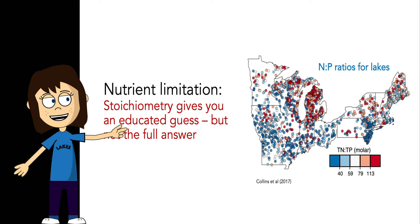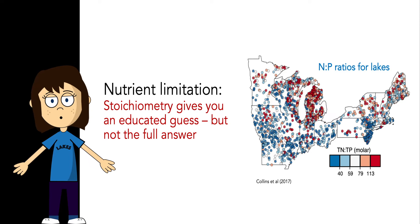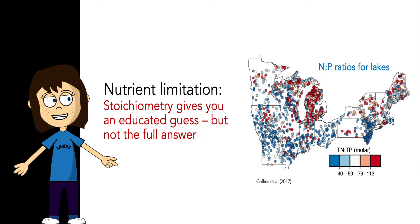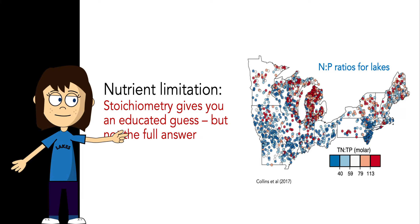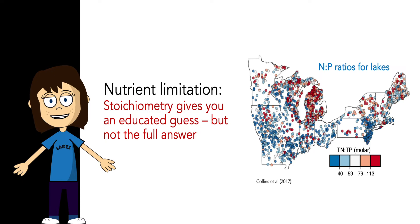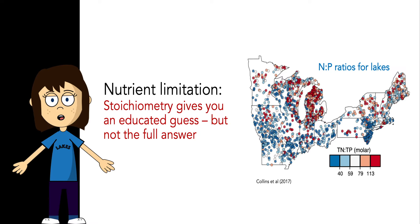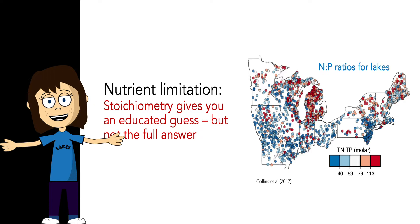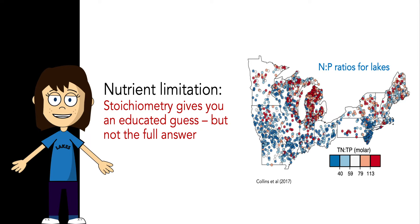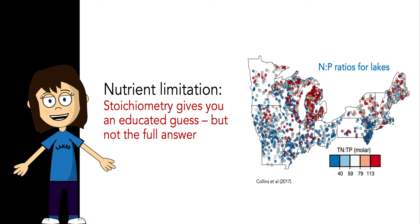Here's a map of nutrient stoichiometry across the midwest and northeast United States, showing the nitrogen to phosphorus ratio in 2,700 lakes. Lakes in the north, such as in Michigan, tend to have a really high nitrogen to phosphorus ratio, likely meaning phosphorus is the limiting nutrient. As you go south into the midwest agricultural belt, that ratio decreases, but it's still much higher than the Redfield ratio of 16 to 1, so phosphorus may still be limiting. Stoichiometry also influences a range of ecological processes, including community composition, because different species have unique nutrient demands.